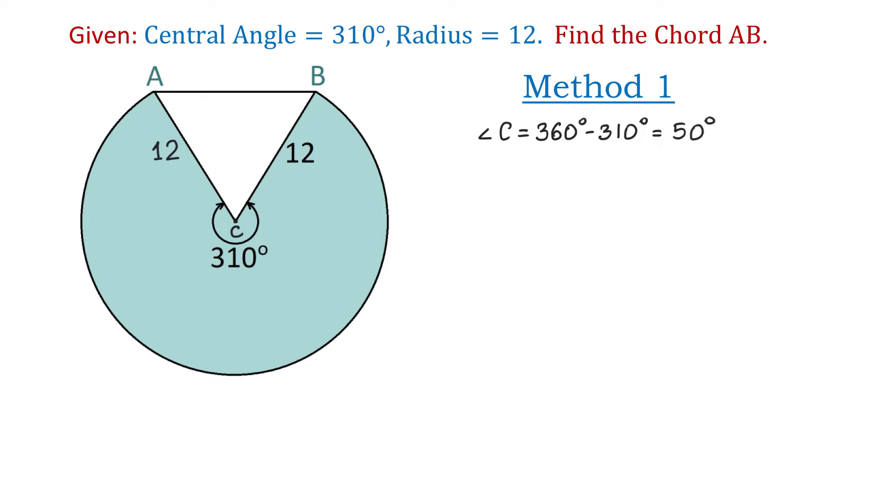Now the angles A and B are equal because they are angles opposite of equal sides. We know that in a triangle the sum of all three angles measures 180 degrees. Therefore, to find one of these angles we will take 180 degrees, subtract angle C which is 50, then divide the result by 2.